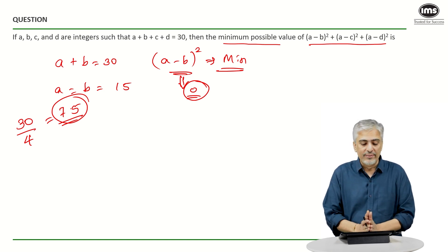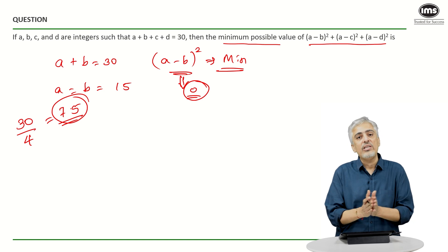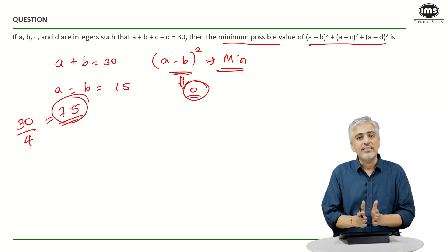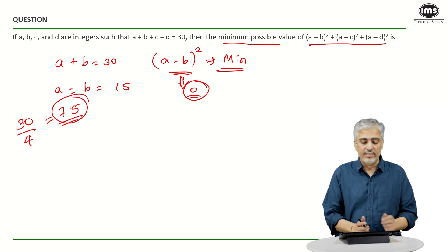So, what are the different values you can think of? So, if you take three of them as seven, one would become nine. Can you get closer than that? Yes, you can get closer than that. So, you can take two values as eight.